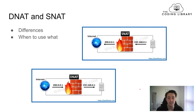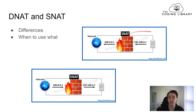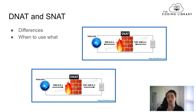Now we're going to talk about DNAT and SNAT. SNAT stands for Source Network Address Translation. If we have a local computer that wants to talk to the internet, it has a local IP address. When it goes through the firewall, which has SNAT, it will change the source address — where the packages are coming from — to a global IP address that can be sent out to the internet.